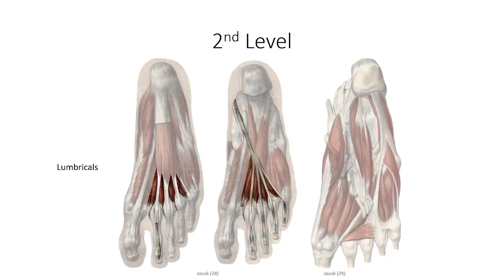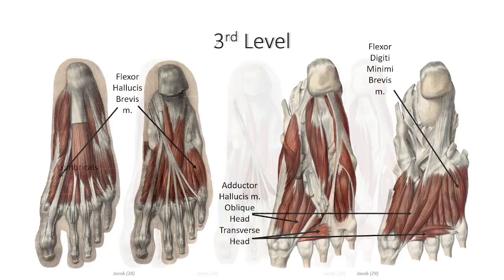Next we have the lumbricals, very similar to what we saw in the hand, originating off the tendons of flexor digitorum longus and inserting on the extensor hood of the dorsum of the digits. As with the hand, contraction leads to flexion of the metatarsophalangeal joint and extension of the interphalangeal joints.